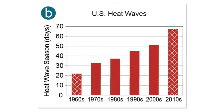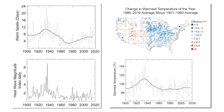Let's look at the heat wave graph which starts in 1960. They carefully picked a period during the global cooling scare to start their graph so that they could show heat waves increasing over time. Here's the underlying data from the part of the National Climate Assessment which didn't go out to journalists and politicians — warm spell days, heat wave magnitude, and warmest temperature of the year. As you can see, summers were much hotter in the United States prior to 1960.